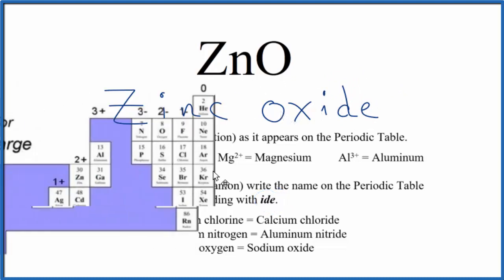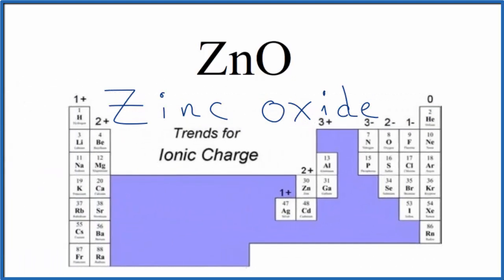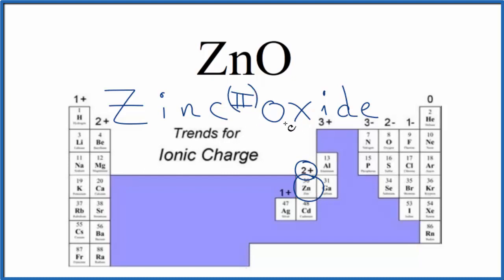If we look at the periodic table, zinc is kind of special. The transition metals in general — we don't really know what their ionic charge will be; we have to look at what they're bonded to. But zinc always has a 2+ ionic charge. For that reason, we don't need to write Roman numeral 2 in here, because it's always 2+.